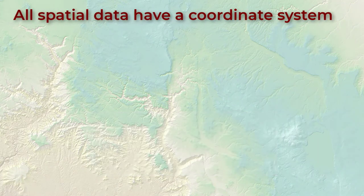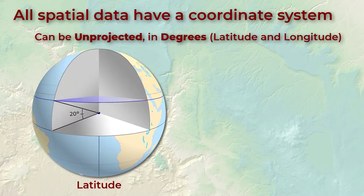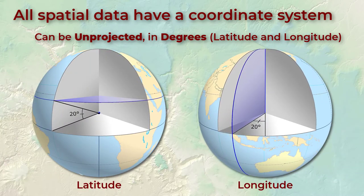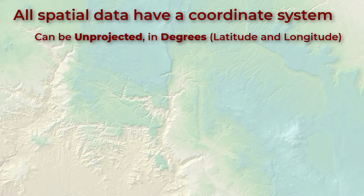All spatial data have some coordinate system — that's what makes them spatial. If that system is on the curved surface of the planet, it's considered unprojected and the coordinate units are in degrees. Latitude measures the angle from the equatorial plane, and longitude measures the angle from the axis that connects the north and south poles. Latitude and longitude do a great job describing position on the planet, but this coordinate system makes it difficult to do common analytical functions like calculating distance and area, and this leads us to projections.